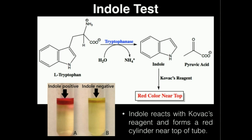Here's the basic theory behind the Indole test. We have an amino acid called tryptophan. It turns out that some bacteria express an enzyme called tryptophanase, and tryptophanase is able to hydrolyze tryptophan into ammonia, indole, and pyruvic acid or pyruvate.